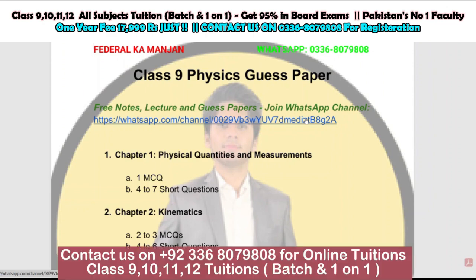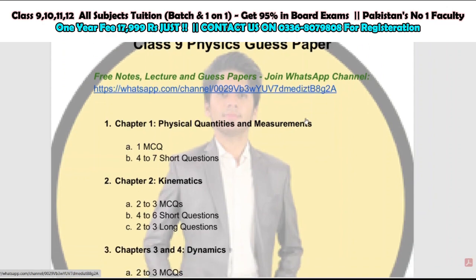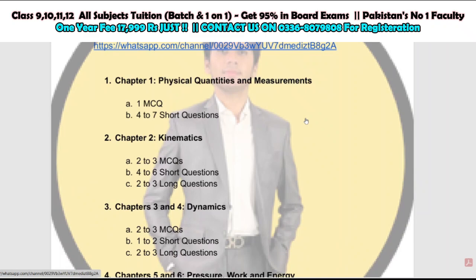Chapter number one is physical quantities and measurement. You are going to get one MCQ from there and four short questions will come from here. This is an important chapter. You are going to get two to three short MCQs from kinematics and two to three from dynamics as well, because it is related to motion. Long questions, numericals, and short questions will all come from here.